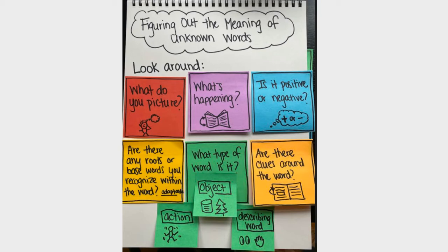I'm going to go over some of these different strategies. The first one is think about what do you picture when you actually read this word — what comes to mind? What else is happening? What's going on in the text in this particular part where you read the word? Is it a positive word or is it more of a negative word? You might not be able to tell, but if you are able to, that could help you.